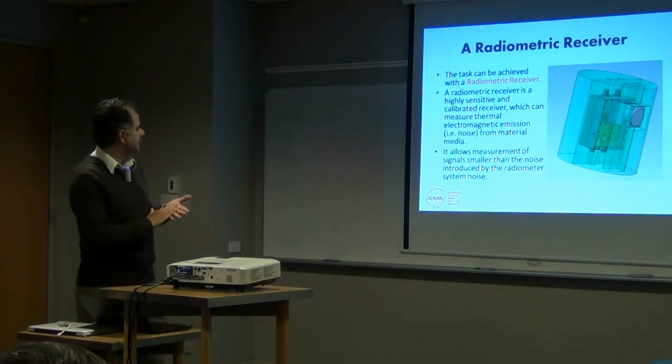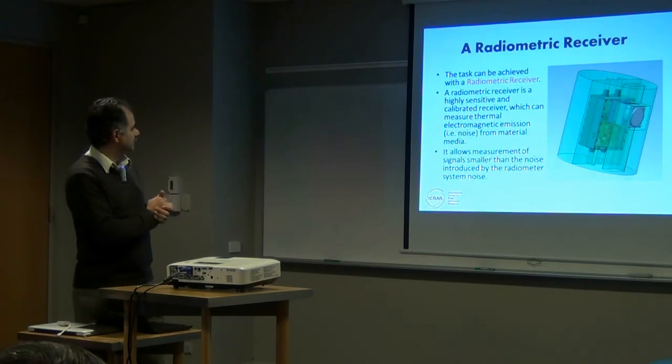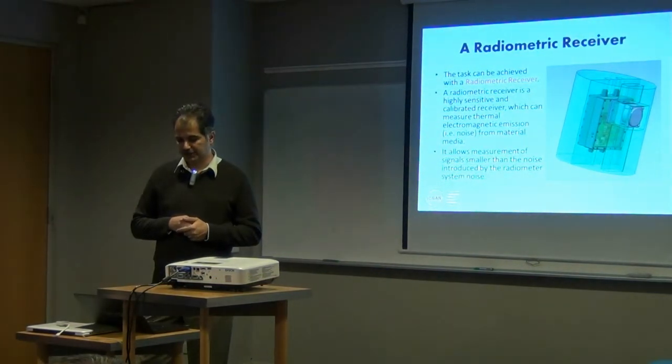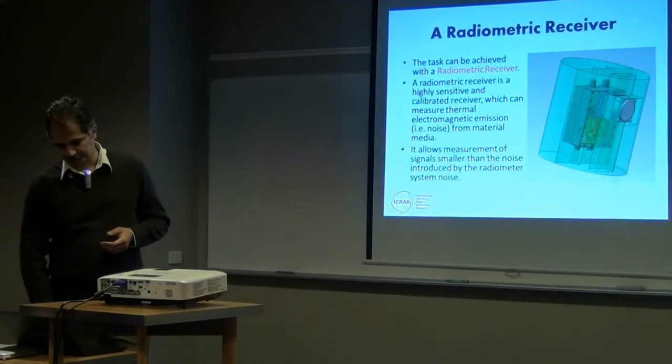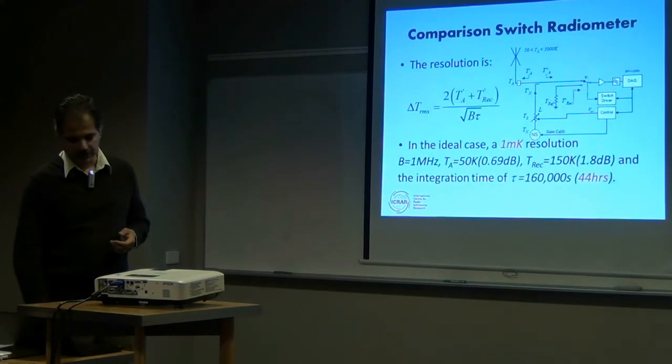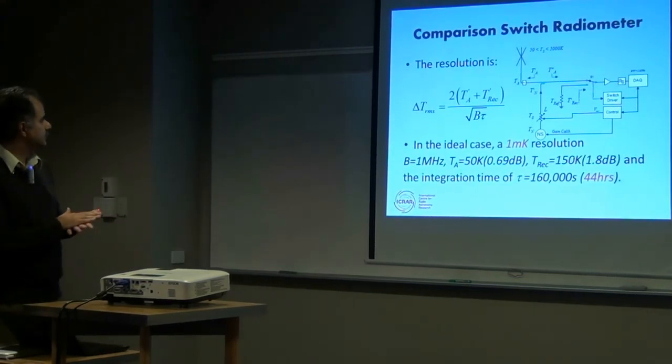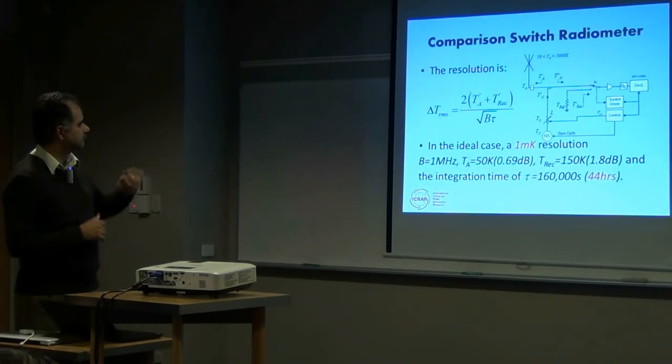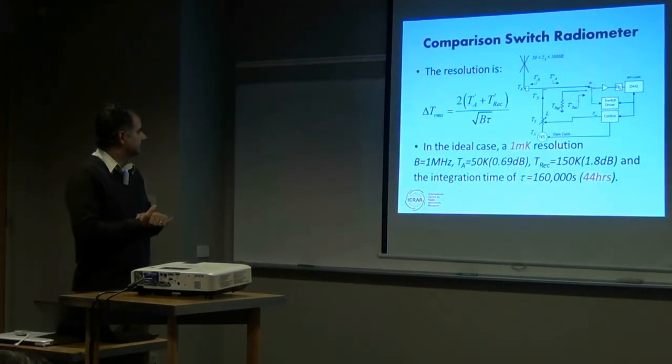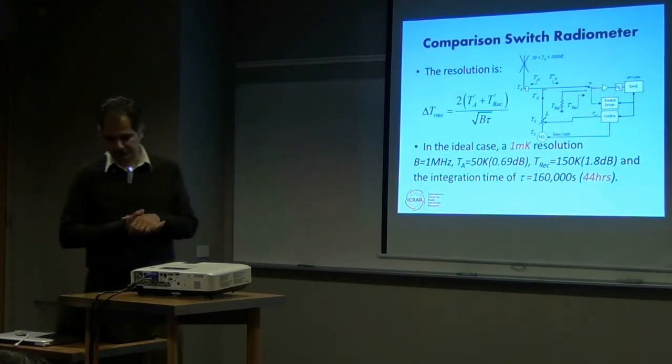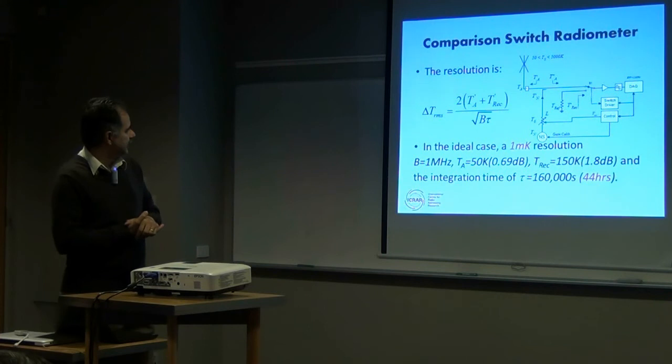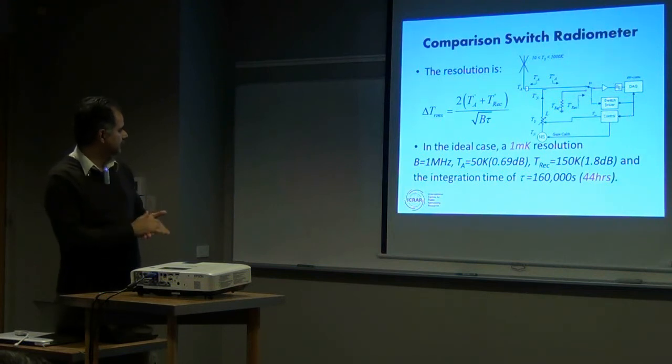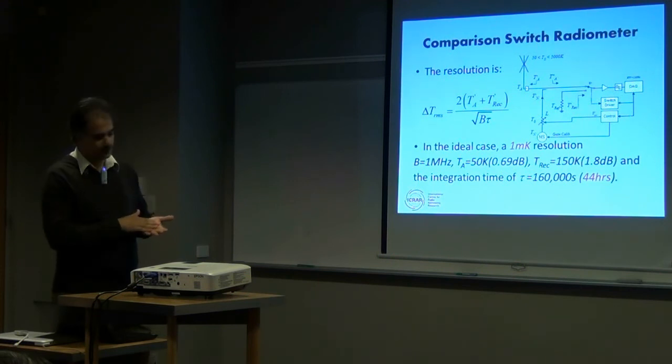That receiver is a radiometric receiver which allows us to do small signal measurements even below the noise of the receiver. The receiver that we have chosen is a comparison switch radiometer with a resolution of two times the system temperature divided by B and tau, which are the bandwidth and integration time. And assuming that we can get 150K of the receiver temperature the integration time that we would need is about two days.